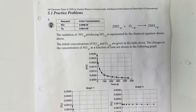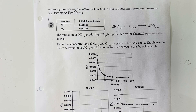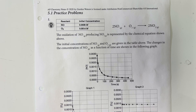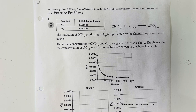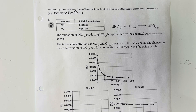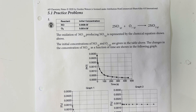5.1 Practice Problems. The oxidation of nitrogen monoxide produces nitrogen dioxide, as represented by the chemical equation shown above. The initial concentration of nitrogen monoxide and oxygen are shown in the table above. The changes in concentration of nitrogen monoxide as a function of time are shown in the following graph.